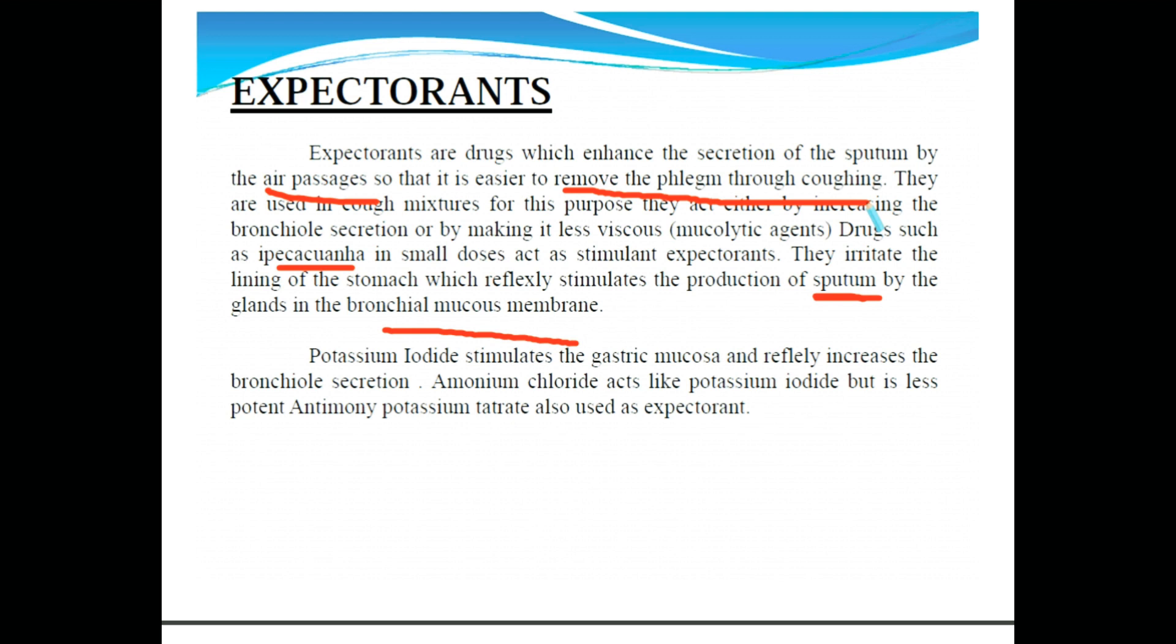Potassium iodide stimulates the gastric mucosa and reflexly increases the bronchial secretion. Ammonium chloride acts like potassium iodide but is less potent. Antimony potassium tartrate is also used as an expectorant.